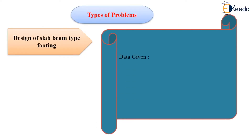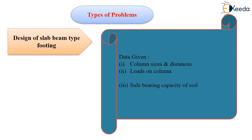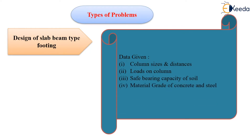In these types of problems, they will give data like column sizes and their respective distances with each other. Then they will give the loads on that particular column. Then safe bearing capacity, or they can give the ultimate bearing capacity of the soil. Then material grade of concrete and steel. Then length or width of the footing.